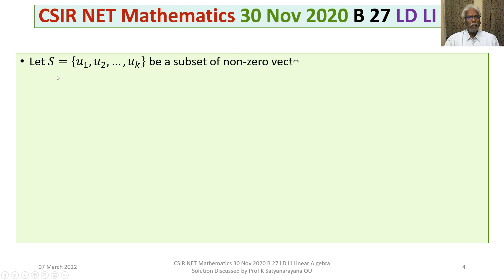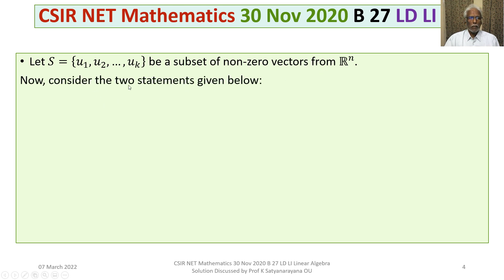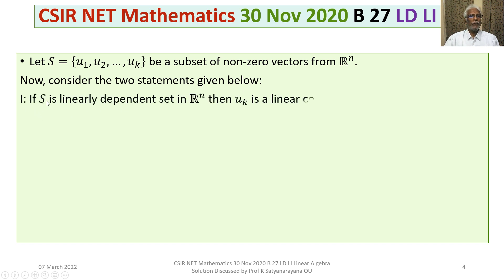The problem is: let S equal to the set consisting of U1, U2, ..., Uk be a subset of non-zero vectors from Rn. Consider two statements. Statement 1: if S is a linearly dependent set in Rn, then Uk is a linear combination of U1, U2, ..., Uk minus 1.